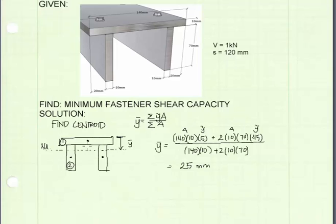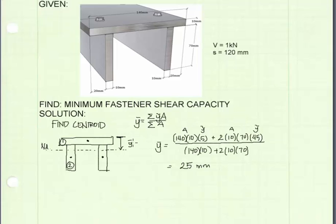I've divided this member up into essentially three parts. There's a top piece — I'll call that piece one — and the legs I'll call piece two. Since they're symmetrical, I'll just need to deal with one of them and multiply the values by two. The first term is the area of piece one: 140 millimeters times 10 millimeters, and the y-tilde is 5 millimeters from its centroid to the datum. The second term is for piece two: there are two legs, area is 10 wide by 70 tall, and y-tilde is 45 millimeters. The total area on the bottom gives us y-bar equals 25 millimeters.